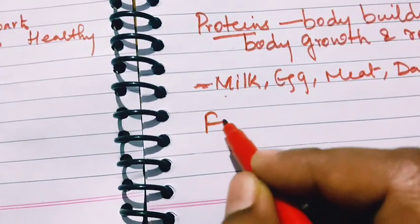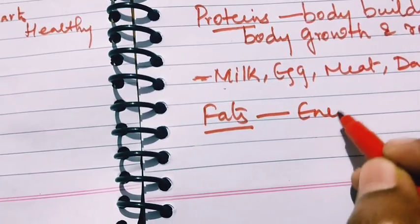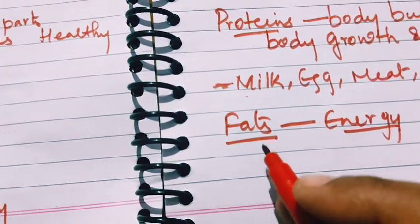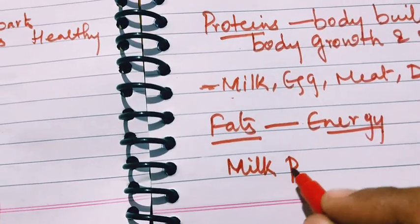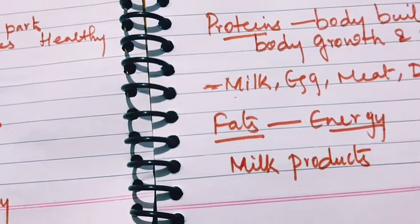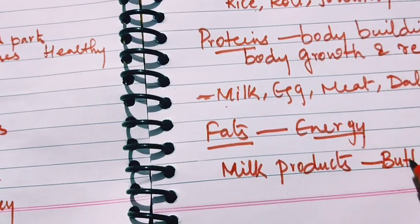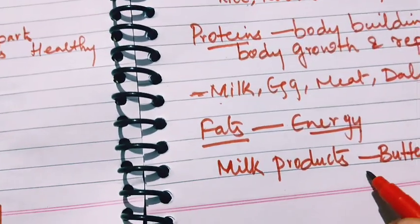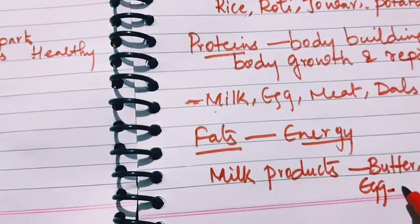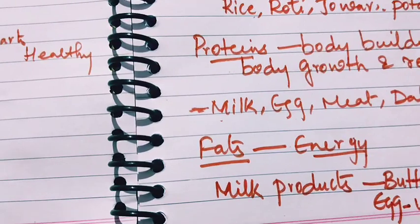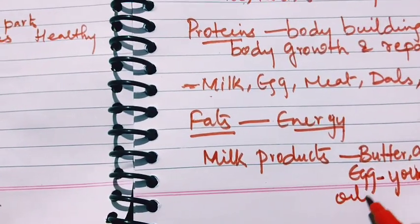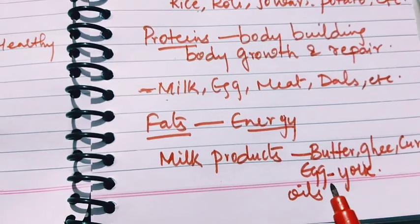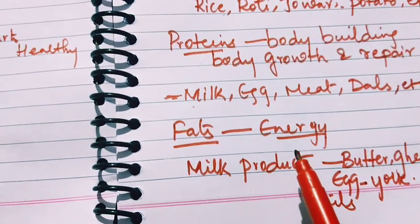Next is fats. Fats also give us energy. These are mostly present in milk products such as butter, ghee, and curd. Fats are also found in egg yolk — the yellow part of the egg — which contains high fat. Cooking oils are also rich in fats. So fats are also an energy-giving food component.